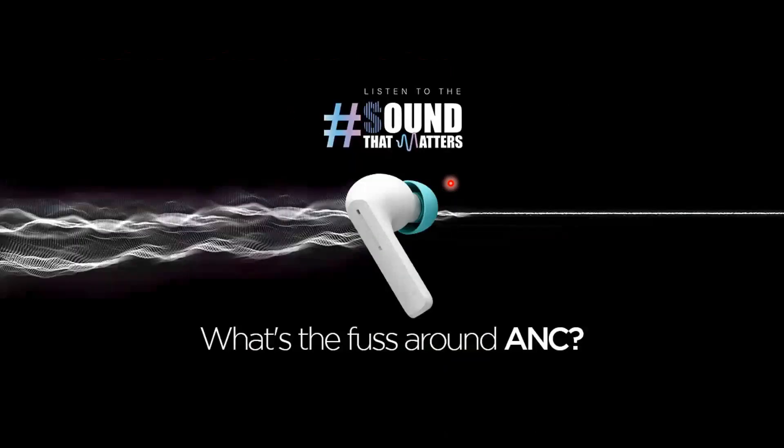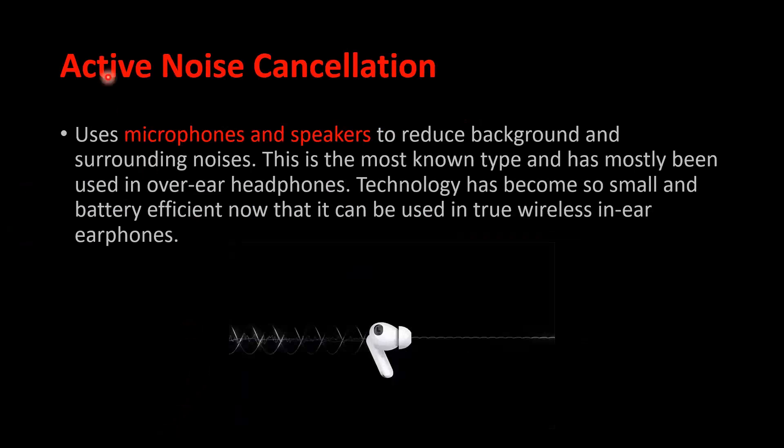So what if we want to cancel out all the noise? That's where active noise cancellation or ANC comes into picture. What is the fuss around ANC? ANC or active noise cancellation uses microphones and speakers to reduce background and surrounding noise. This is the most known type and has mostly been used in over-ear headphones. Technology has become so small and battery efficient now that it can be used in truly wireless in-ear earphones also.